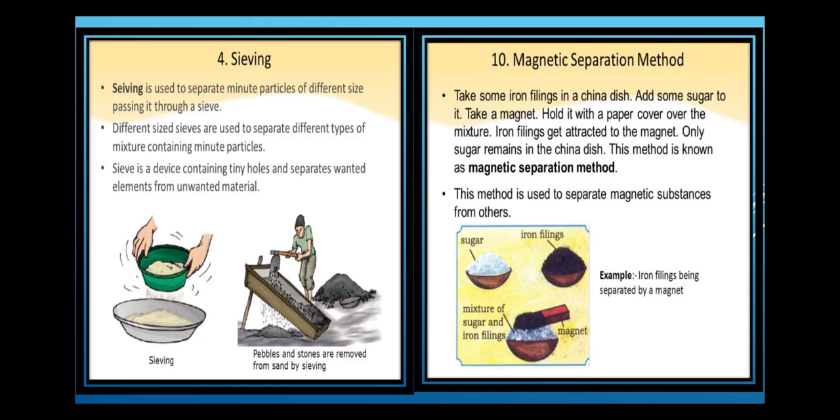Sieving is used to separate minute particles of different sizes by passing them through a sieve. A sieve is a device containing tiny holes that separates wanted elements from unwanted material. Different sized sieves are used to separate different types of mixtures containing minute particles. Examples include refining flour at home and removing pebbles and stones from sand at a construction site.